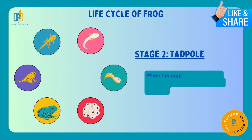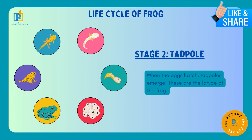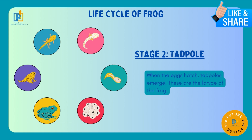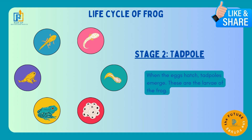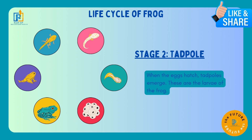Stage 2: Tadpoles. When the eggs hatch, tadpoles emerge. These are larvae of the frog. Egg se bante hain tadpoles, aur ye tadpoles larvae hote hain frog ke.